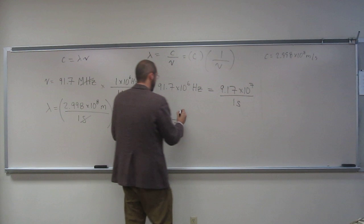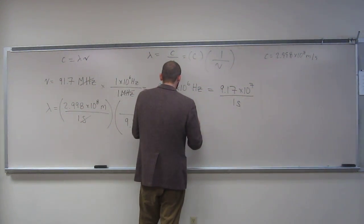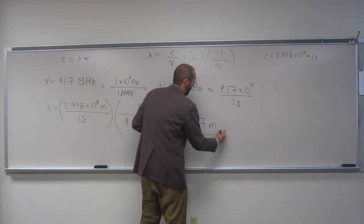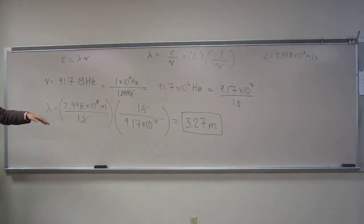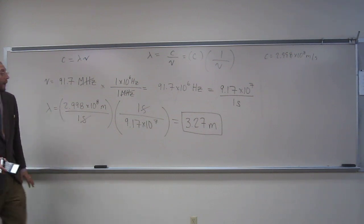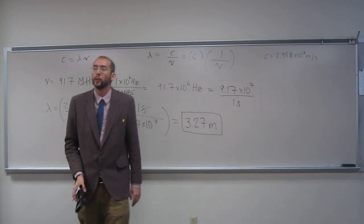So how many meters is it going to be? Three point, and we went to 360, so 27 meters. So if your favorite radio station is 91.7, it's feeding your radio with waves that are 3.27 meters long.